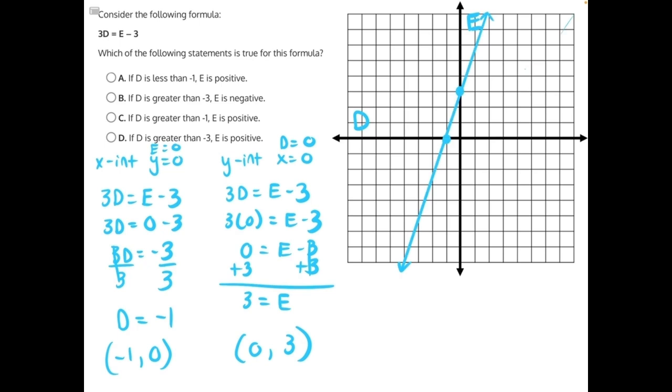Here I have plotted our graph, and I used our two intercepts. We had negative 1 comma 0, so I went to the left 1 and up 0. And then we had 0 comma 3. I went left or right 0, and I went up by 3. So now we can analyze this graph to help us figure out what our correct answer is.